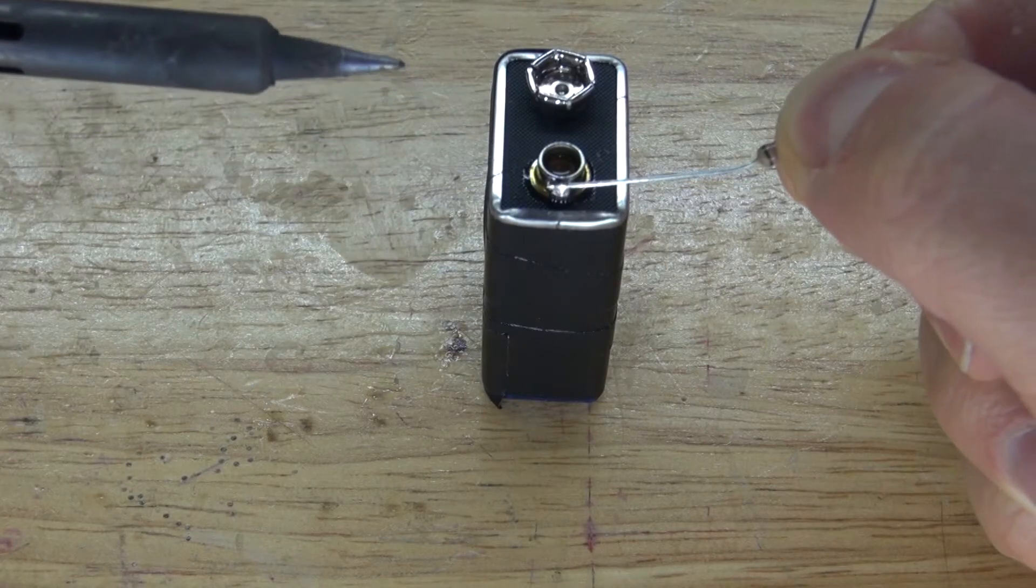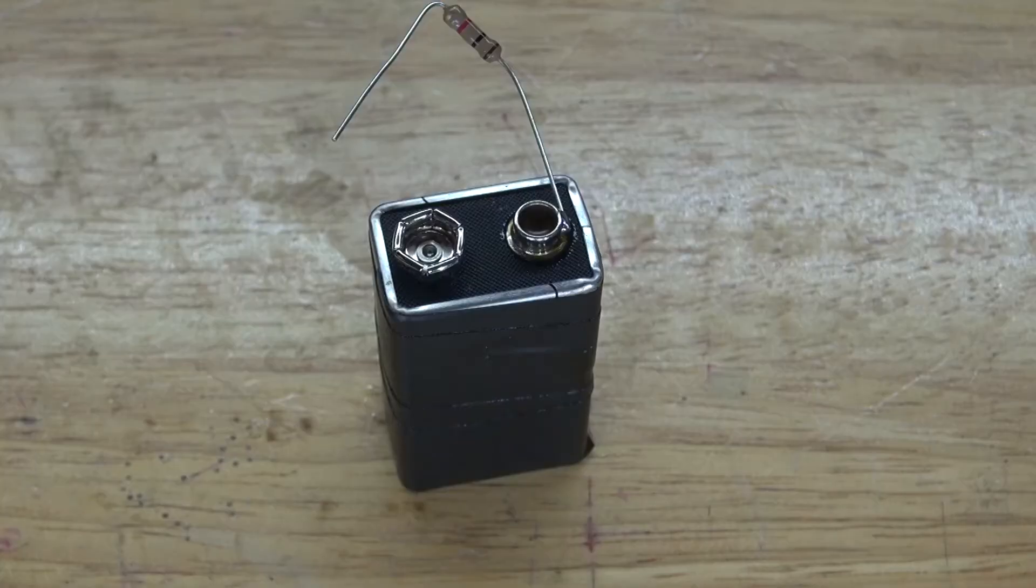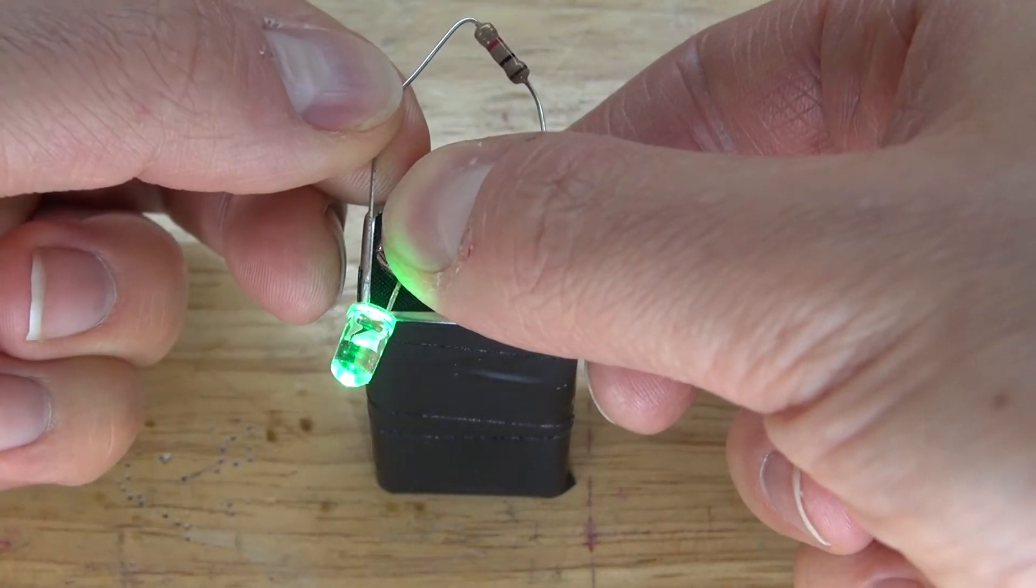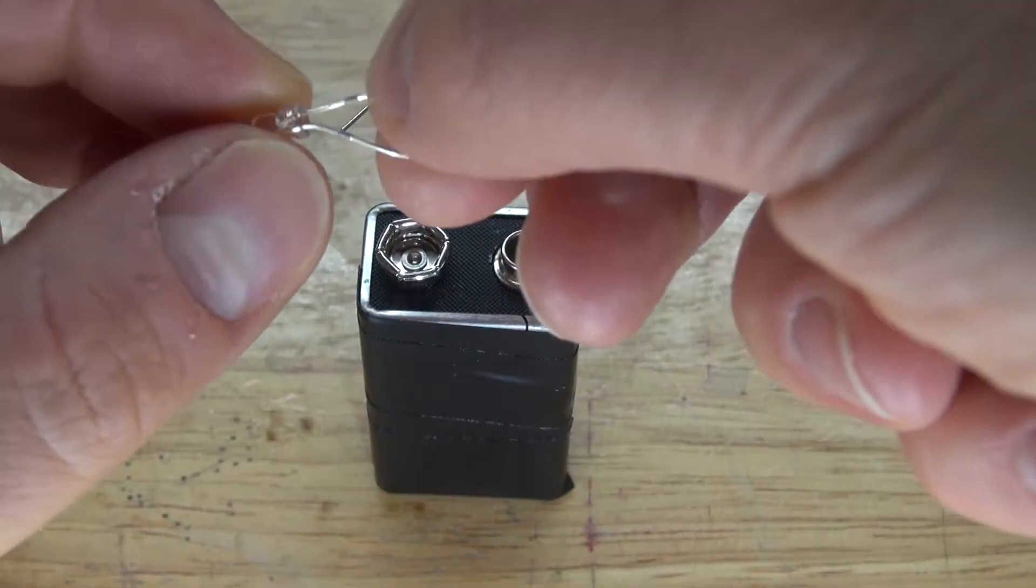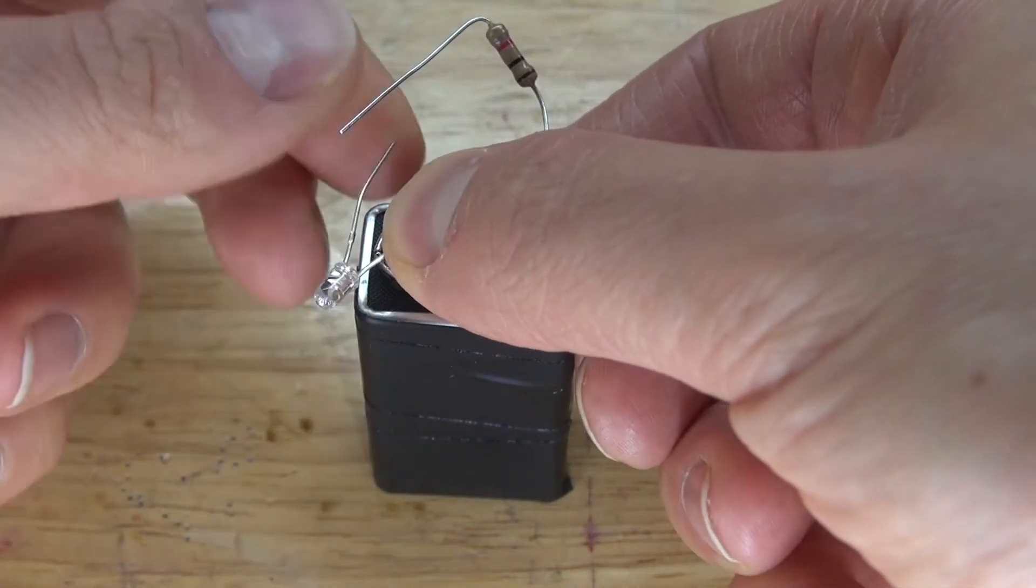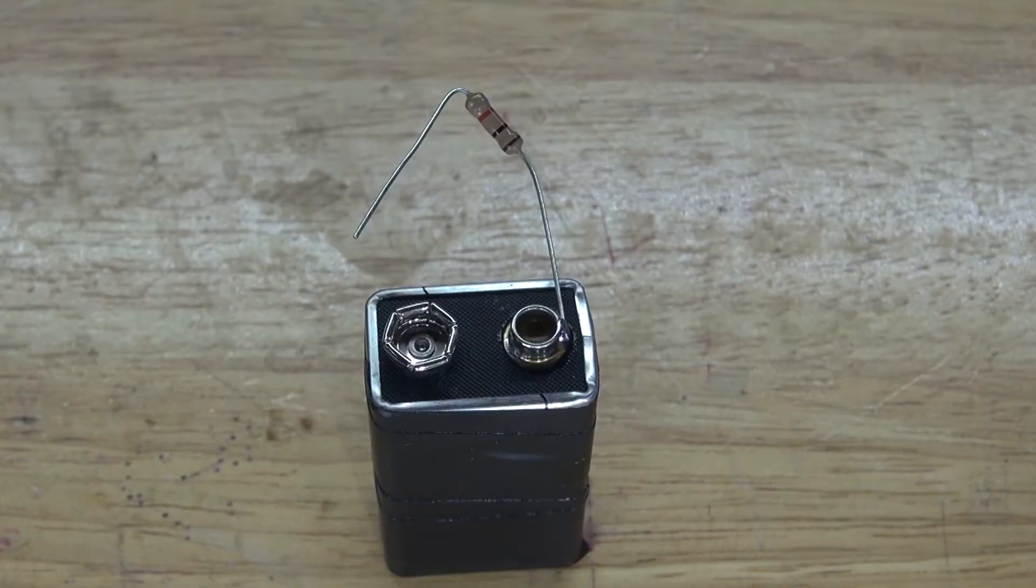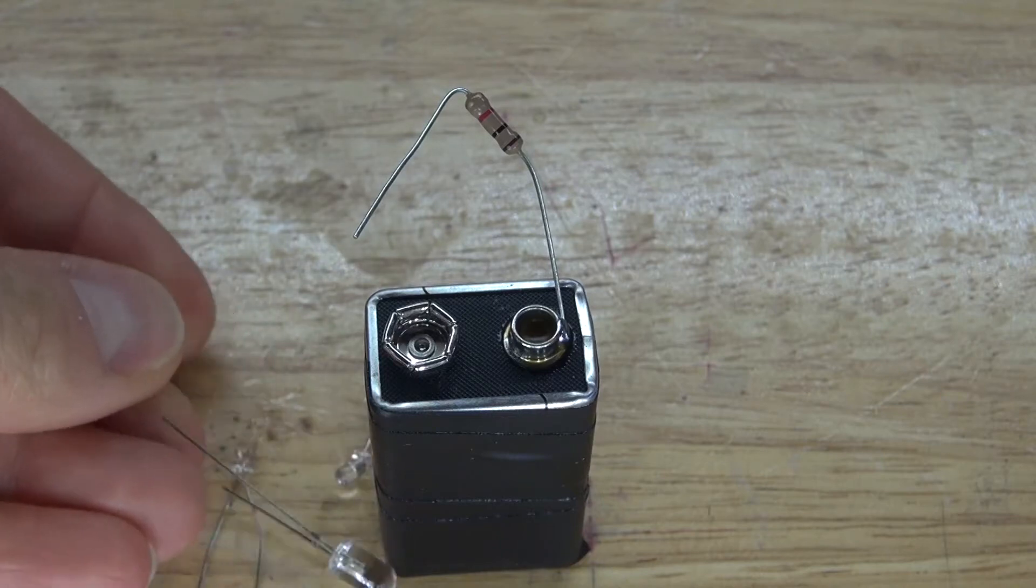Next solder the 1k ohm resistor to the positive terminal of the 9-volt battery and now you can take an LED, take the cathode and place it on the negative and connect the 1k ohm resistor to the LED. And there, a very simple LED tester. Now you can identify different color of LEDs and see if an LED works.